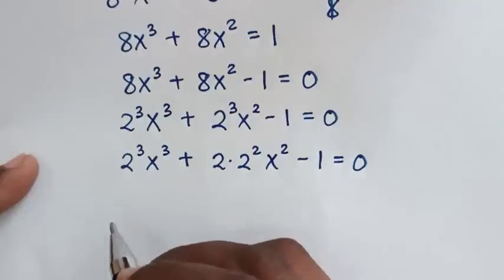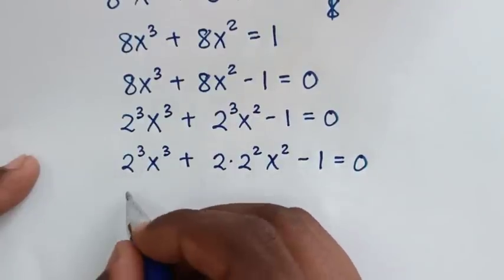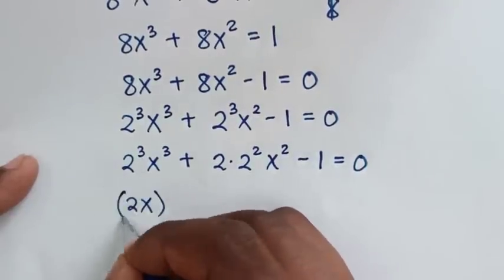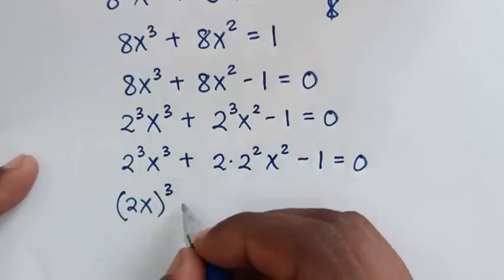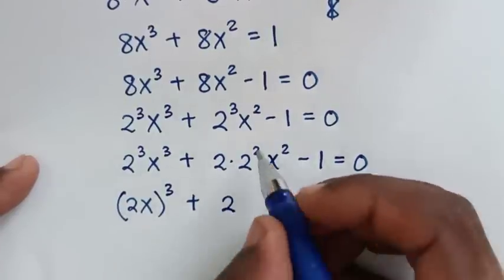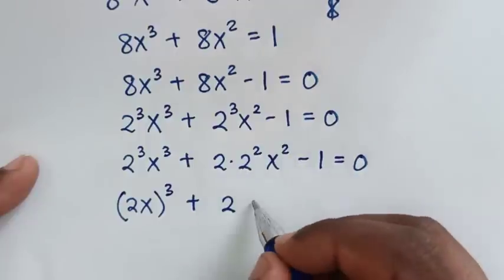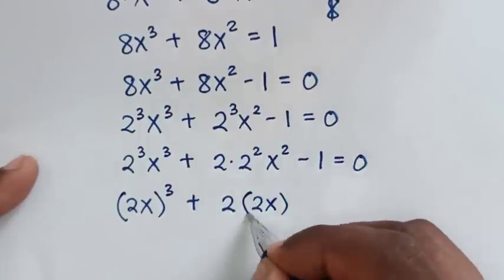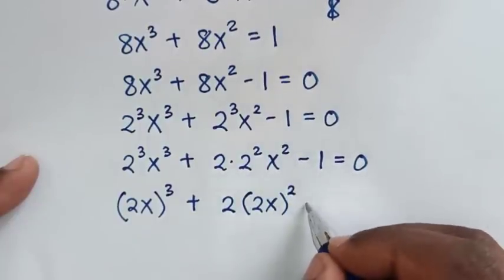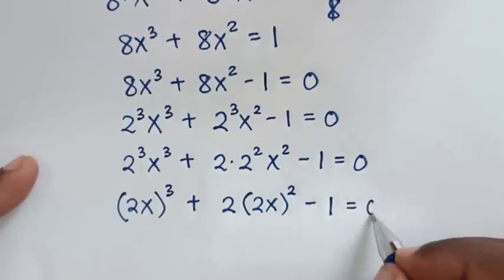In the next step, power of 3 is common, so we get (2x)³; then plus 2 times (2x)², because power of 2 is common there; then minus 1 equals 0.